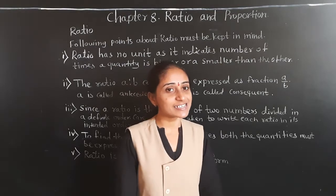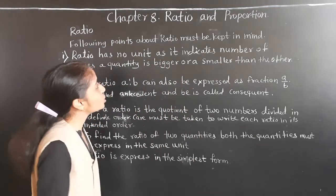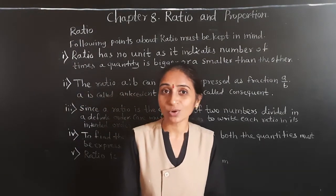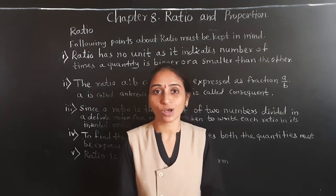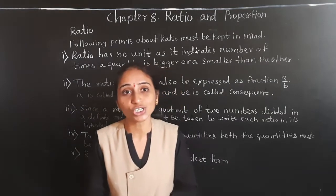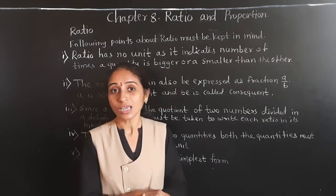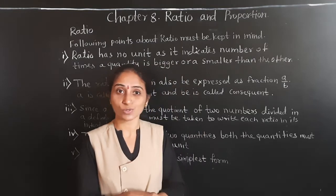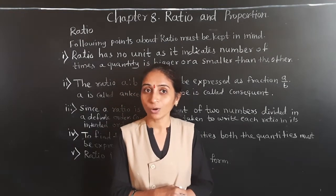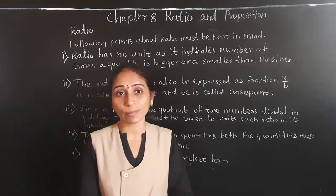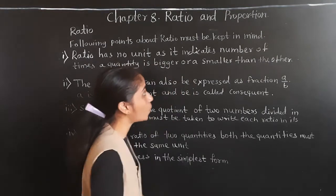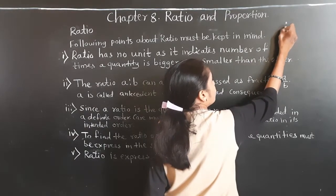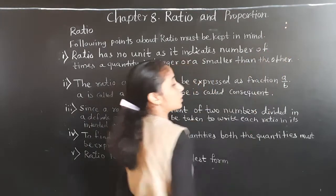Good morning students. Let's learn a new chapter: Ratio and Proportion. What is ratio? The ratio is a quotient between two numbers or measurements. A ratio is usually denoted by using a colon — these two dots we use to show the ratio, and this is called the colon.